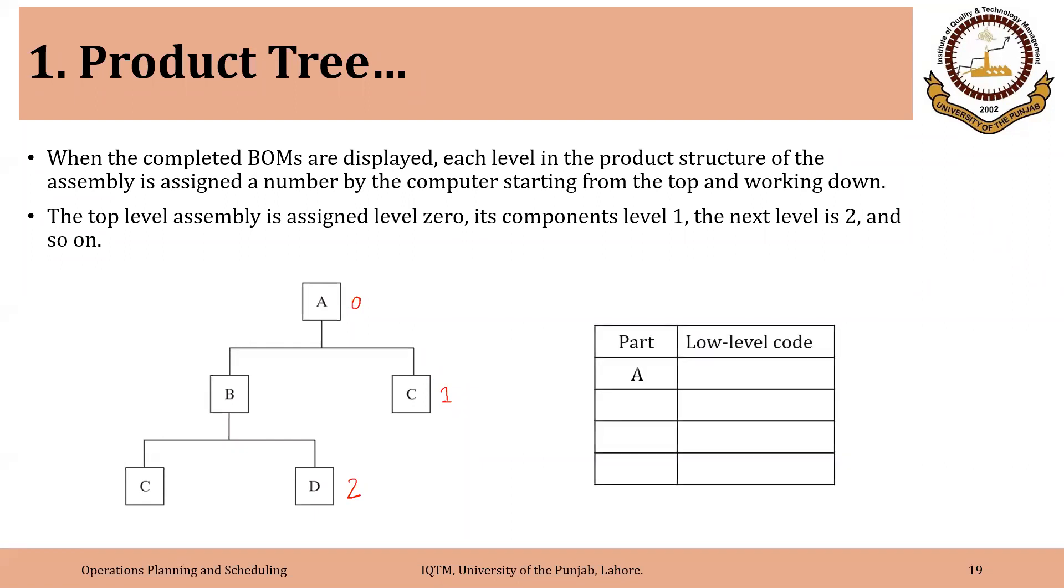So in this case, the product A has level 0, or maybe 10 or 100, depending upon whether we are using single digit or two digit or three digit coding. So the sub-assembly B has a code 1. Now, the C is tricky because C is being used here as well as here. So whether we will assign a level 1, level 2 or both.